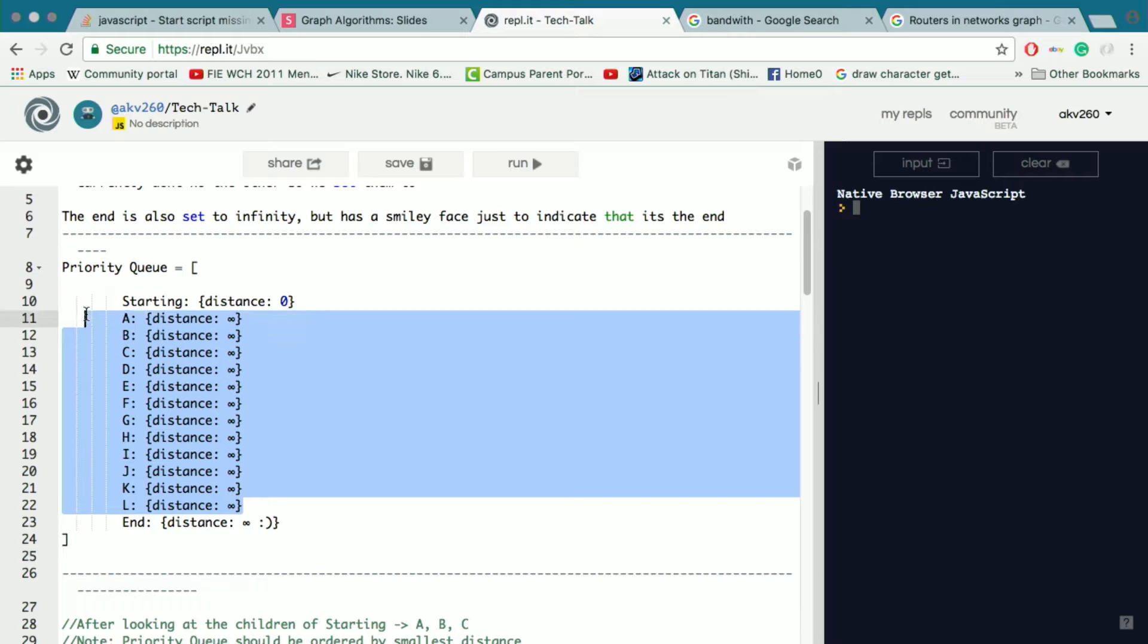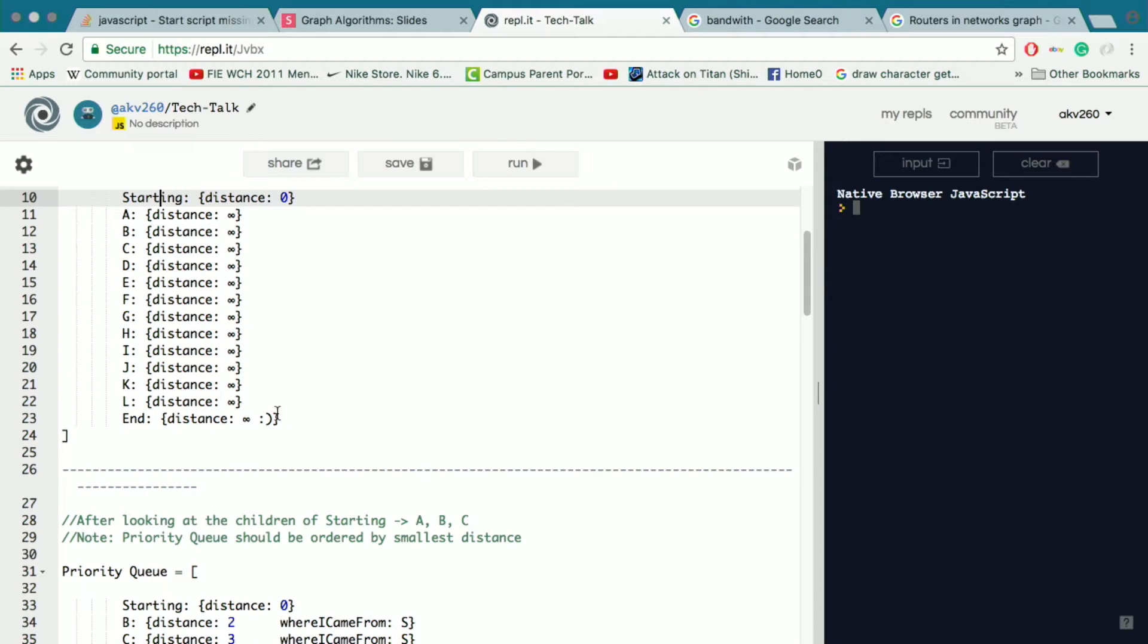And these are all the nodes that are in the middle. So currently we don't know the distance from any of these nodes from the starting point. We only know that from the starting point to the starting point the distance is zero. And you can notice that by the smiley face here because I just use that to separate the end node from every other node.